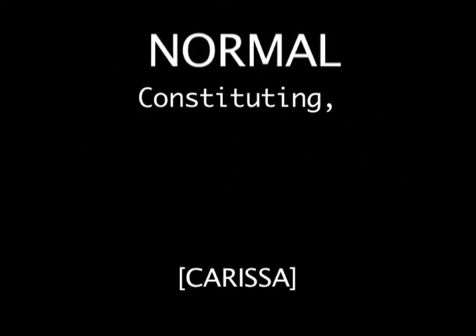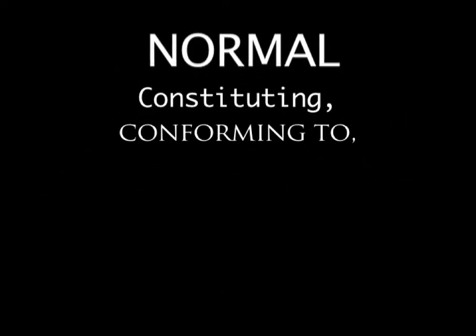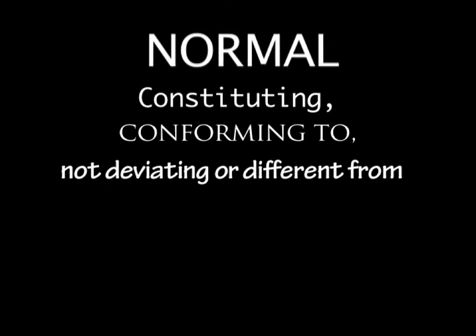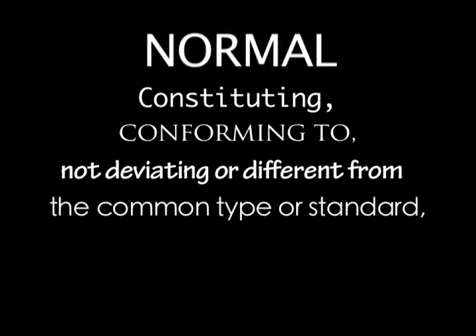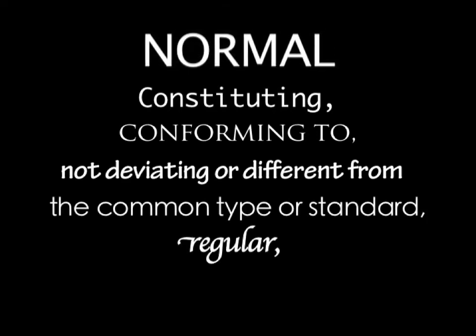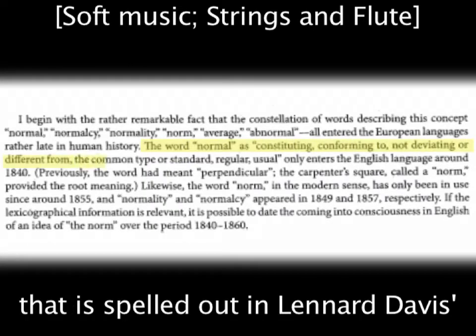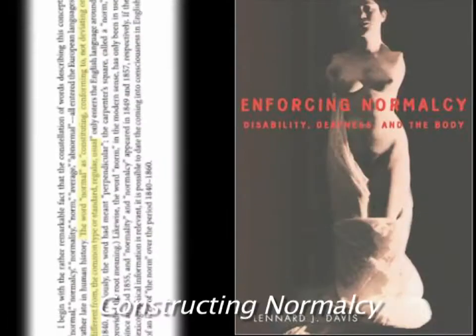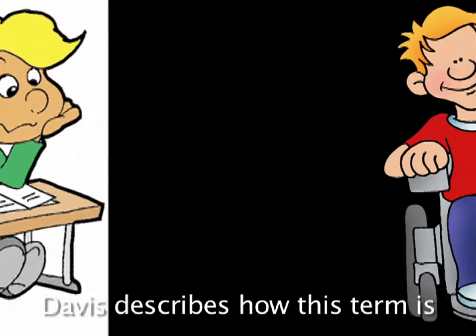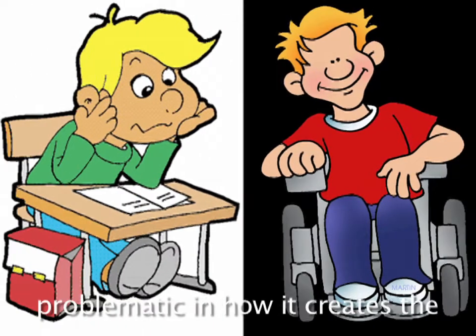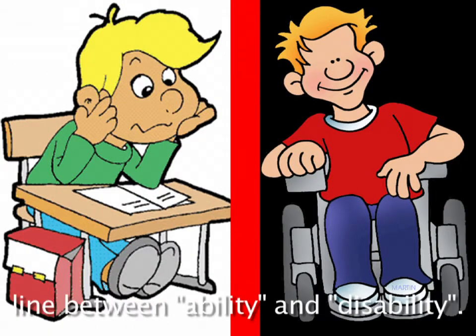Normal. Constituting, conforming to, not deviating or different from the common type or standard — regular, usual. This is the definition of normal that is spelled out in Leonard Davis' Constructing Normalcy. Davis describes how this term is problematic and how it creates the line between ability and disability.